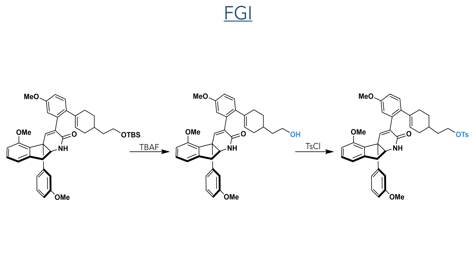In preparation for the macrocyclisation reaction, a functional group interconversion was carried out on the alkyl chain. The TBS group was deprotected using TBAF to yield the alcohol, which was then reacted with tosyl chloride to convert it to a tosylate, which is a more reactive leaving group.